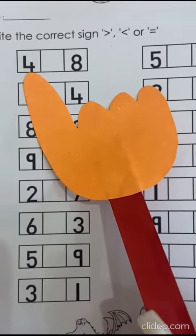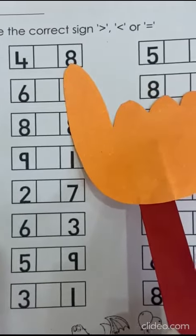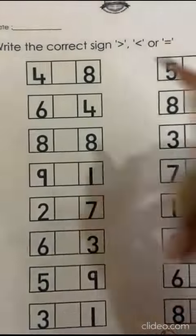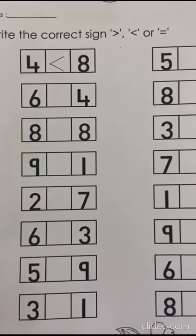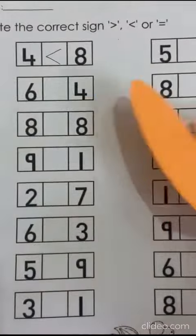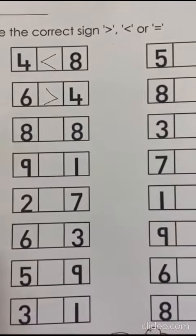So the first number is 4, 8. So which one is the bigger number? Absolutely right, 8. So we are going to put the sign towards 8. Now the next one, 6 and 4. Yes, 6 is the bigger number.